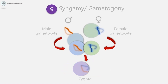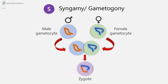The next method is syngamy, or gametogony. In Sporozoa, male and female gametocytes are produced which, after fertilization, form the zygote, which gives rise to numerous sporozoites by sporogony — for example, in the parasite Plasmodium. In the diagram, a male gametocyte and a female gametocyte fuse together to form a single cell, the zygote.